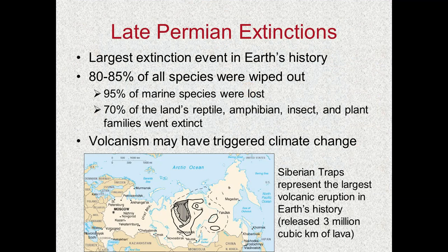Let's talk about the Permian extinction event — it happened at the end of the Permian period in the late Paleozoic. It wiped out 80 to 85% of all species. It was particularly bad in the oceans, where 95% of marine species went extinct, including our trilobites — they're gone. 70% of the land's reptile, amphibian, insect, and plant families went extinct. The amphibians, who were once dominant, really got hit the hardest — they will never recapture that dominance again. Notice insects are very hardy and able to adapt to changing environments pretty well. The fact that it affected the insect community tells us it was a very serious extinction event.